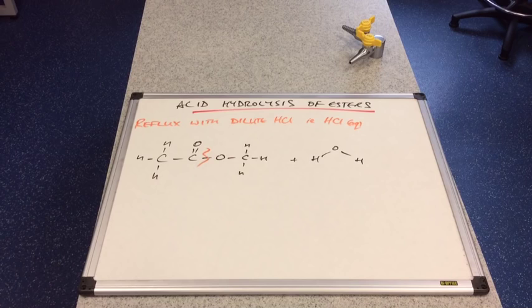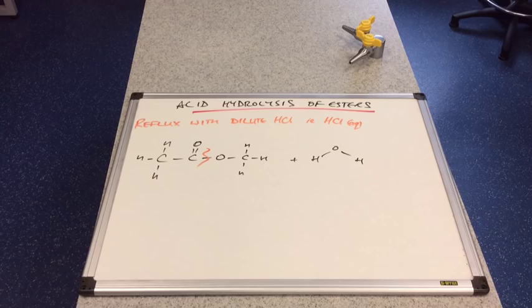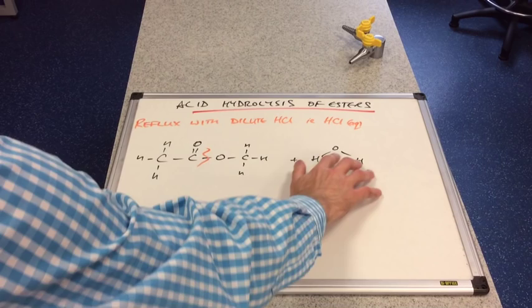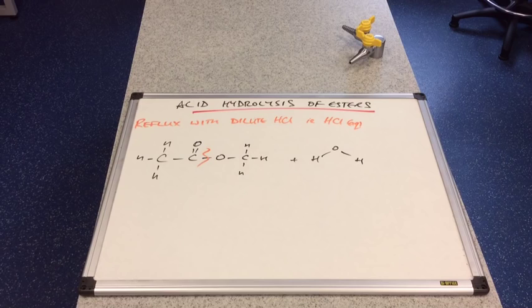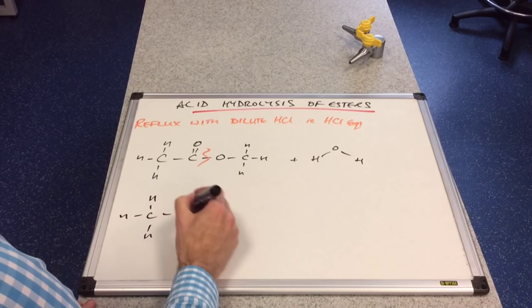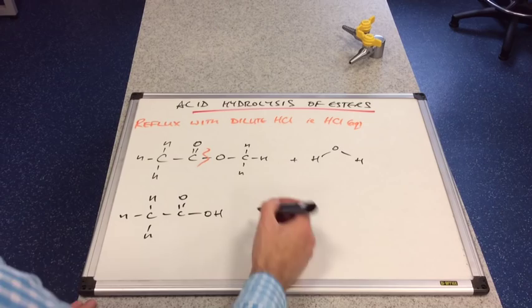So that bond's going to break. If you have a think about what could be produced. And I always say to my students, think of water as in two parts, HOH. And hopefully that will help you to see what's going to be produced. So we're going to get CH3, C double bond O, OH.